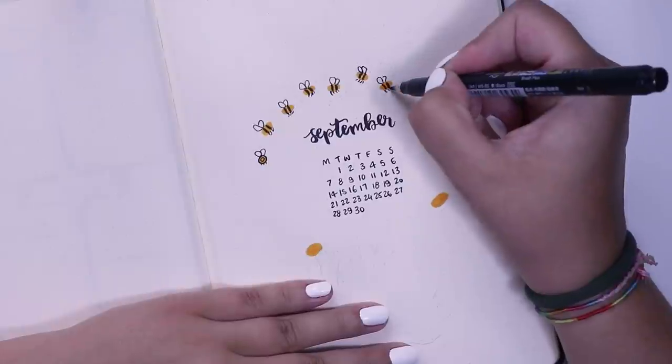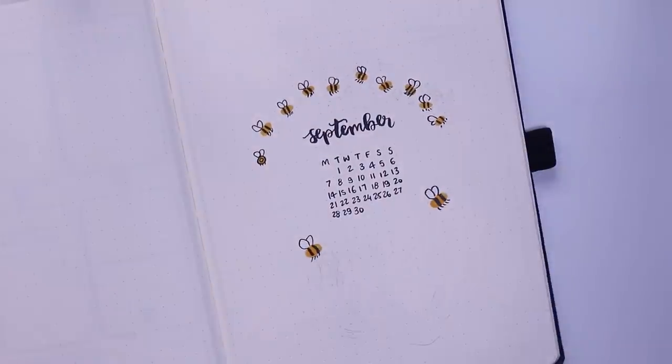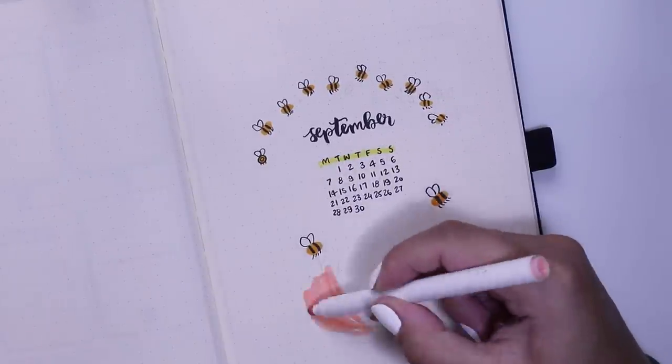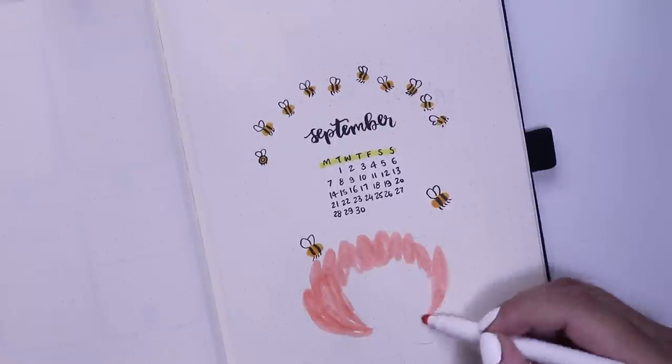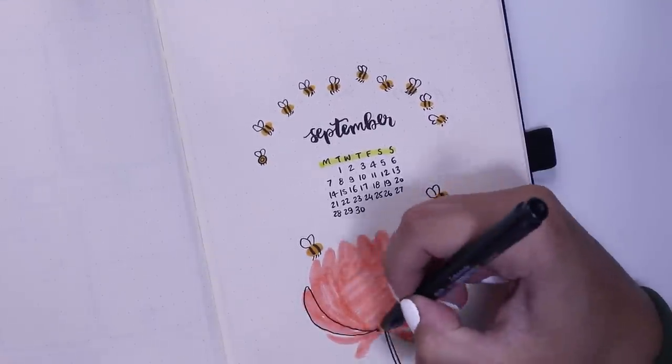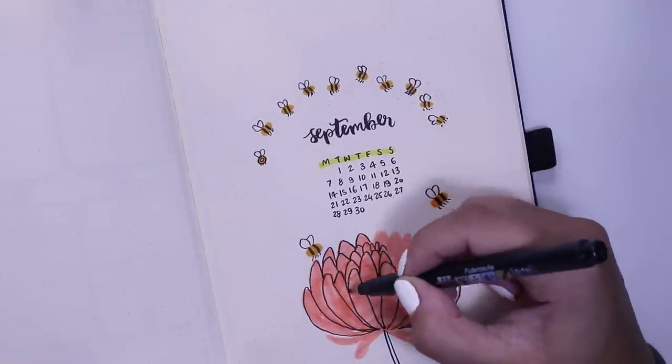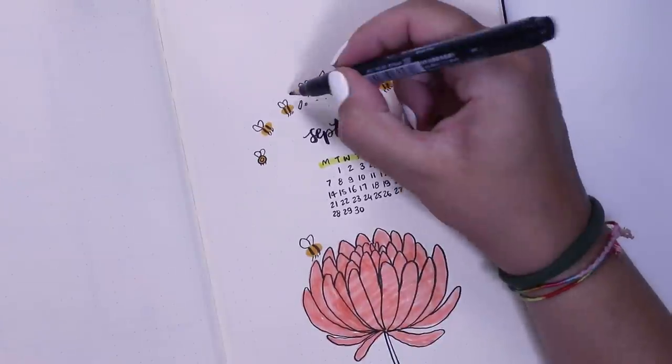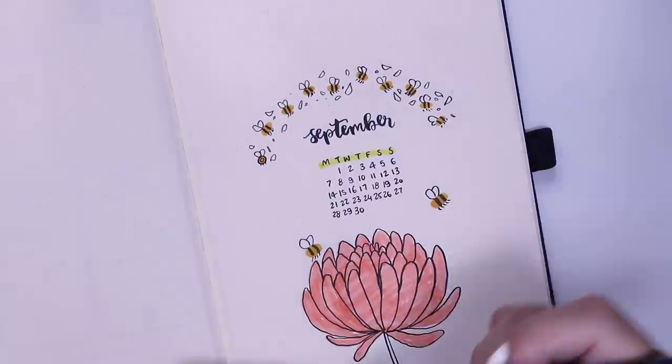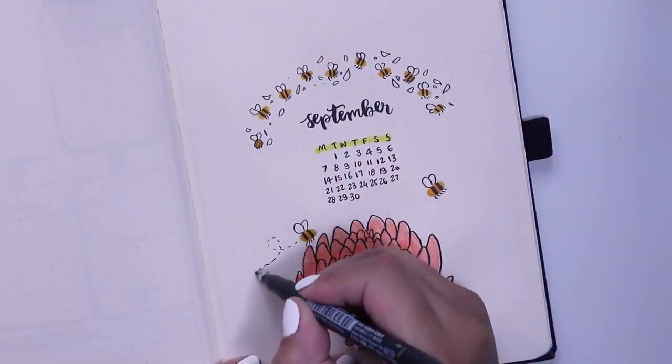For my title screen, I drew a bunch of little bees flying above the title September. Then I wanted to fill in that little area down there, so I drew out a beautiful little flower and I'm going to have two bees flying in to just perch on it. I think it ended up looking adorable. I also included a little overview of the month as I normally do underneath the September title.